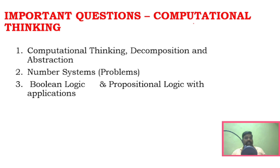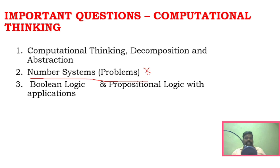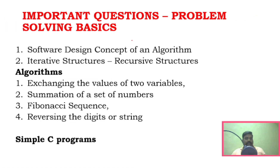For Unit 2, computational thinking — decomposition and abstraction concepts are very important. Number system conversions are also key. Boolean logic and proportional logic should be reviewed. For Unit 3, the software design concept of an algorithm, iterative structures, and recursive structures are important topics to confirm.